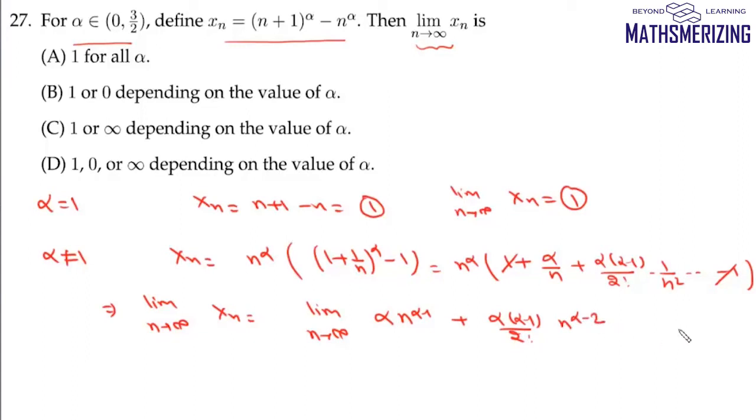If alpha lies between 0 and 1, all these powers of n will be simply 0. In that case, the value of this limit will be 0.